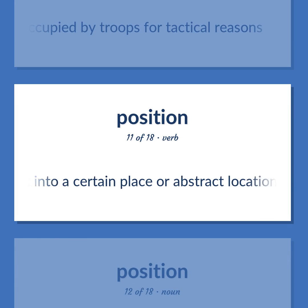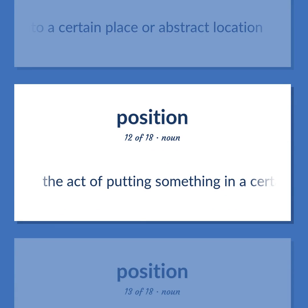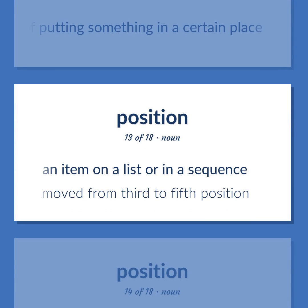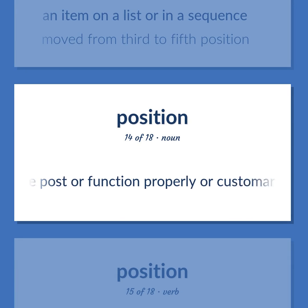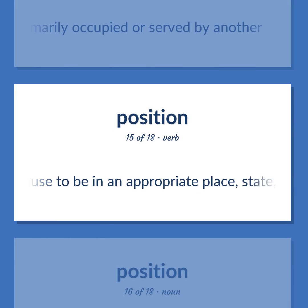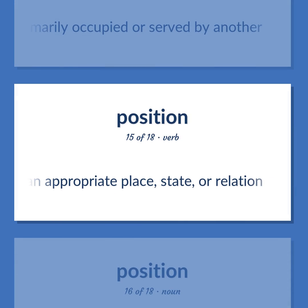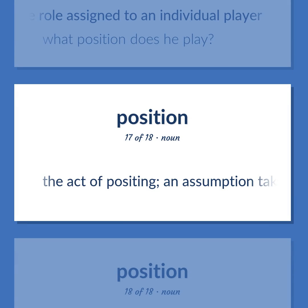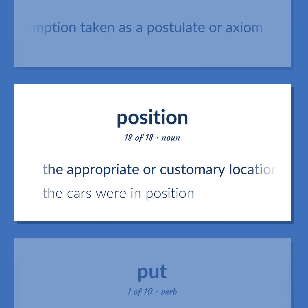Put into a certain place or abstract location. The act of putting something in a certain place. An item on a list or in a sequence — moved from third to fifth position. The post or function properly or customarily occupied or served by another. Cause to be in an appropriate place, state, or relation. In team sports, the role assigned to an individual player — what position does he play? The act of positing; an assumption taken as a postulate or axiom. The appropriate or customary location — the cars were in position.